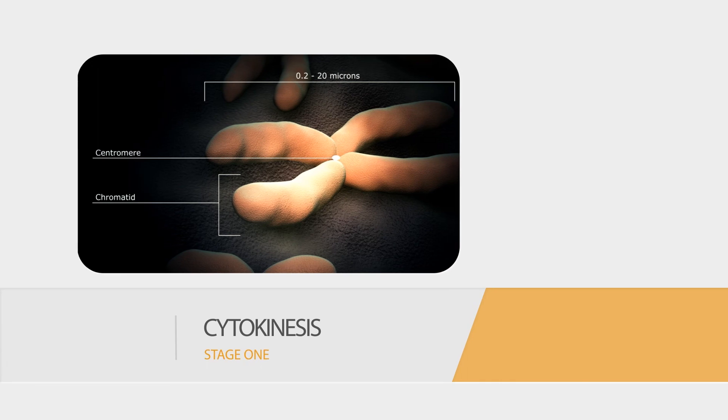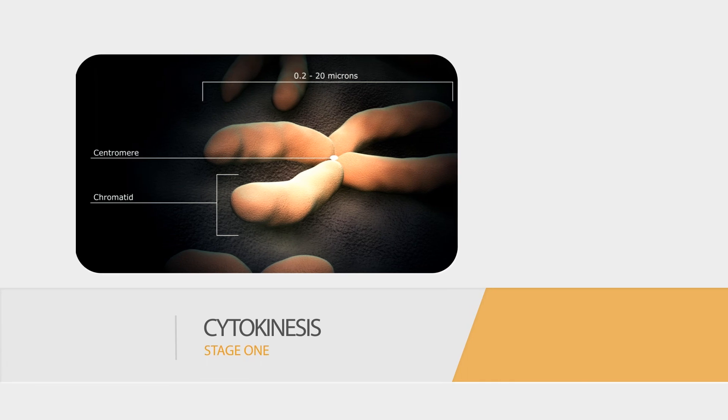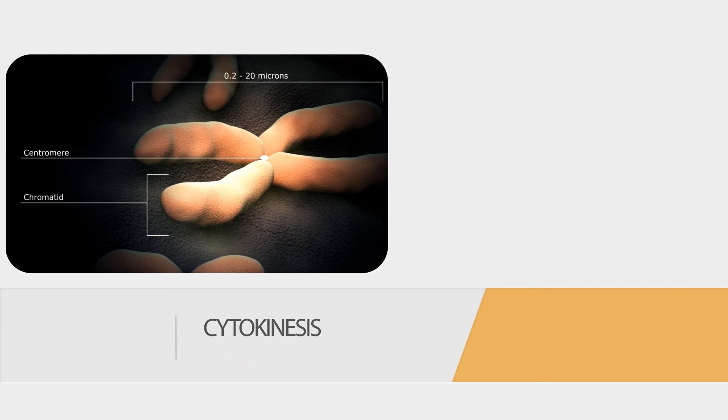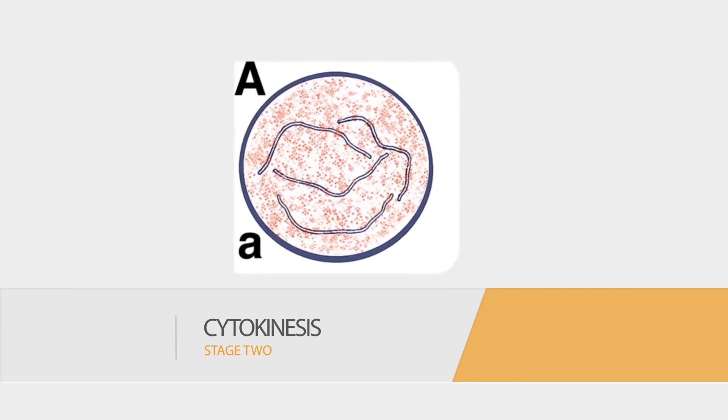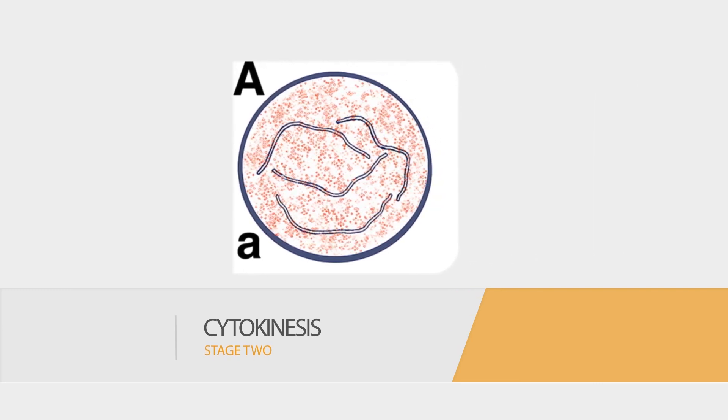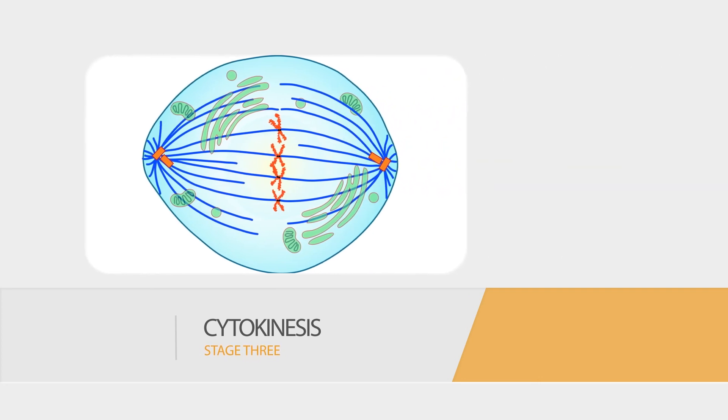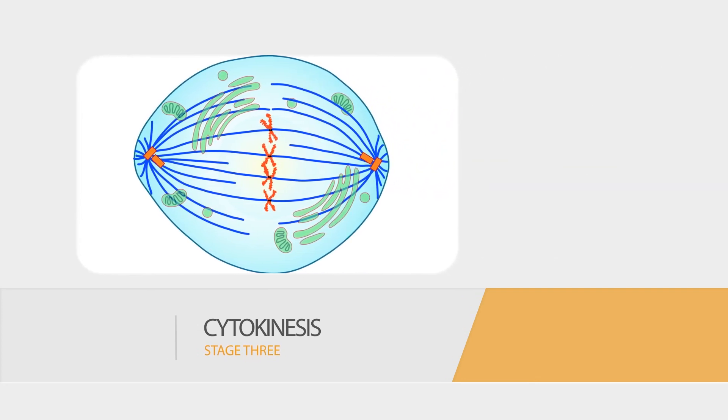Stage 1. The DNA in the chromosomes is copied to form two identical strands joined in the center by a structure called a centromere. Stage 2. The membrane around the nucleus breaks down and threads form across the cell. The chromosomes line up on the threads. Stage 3. The duplicated chromosomes are pulled apart by the threads. The single chromosome moves to opposite sides of the cell.